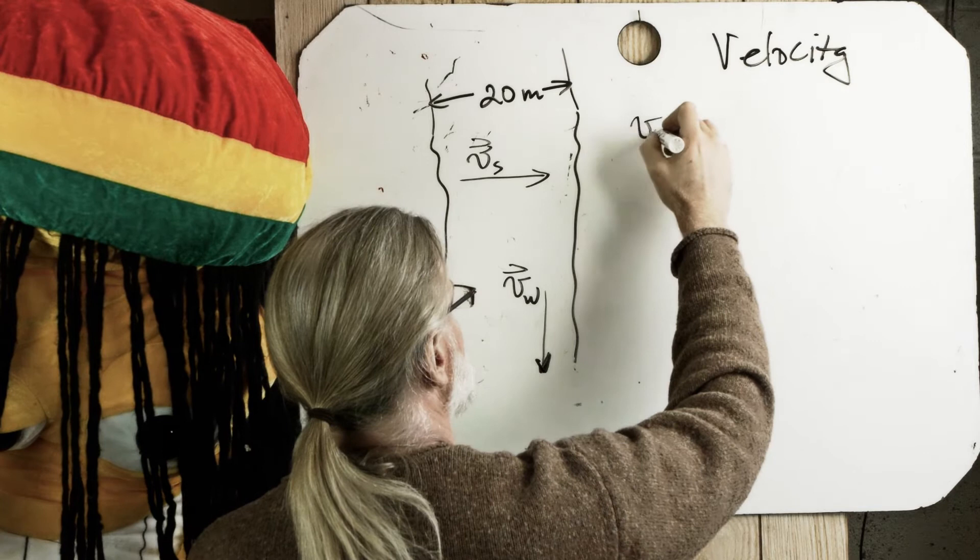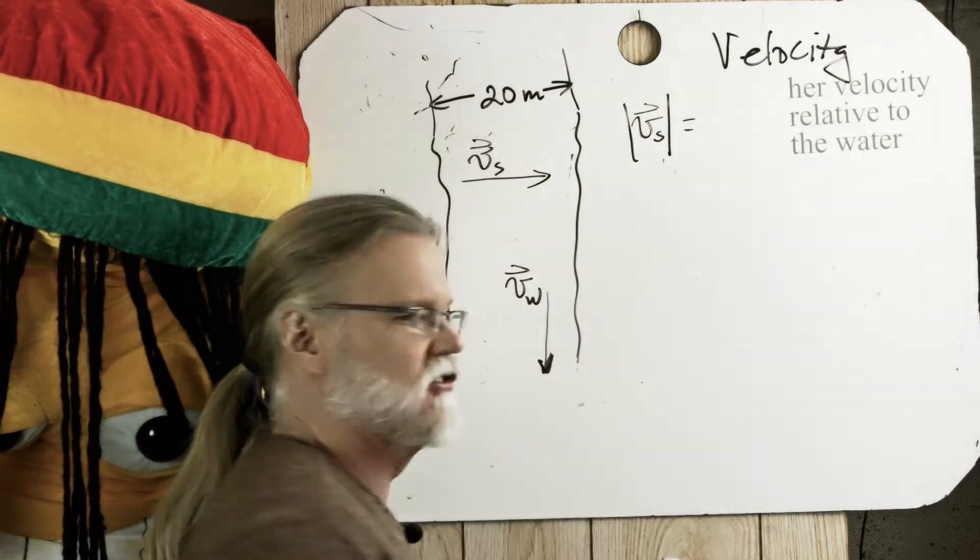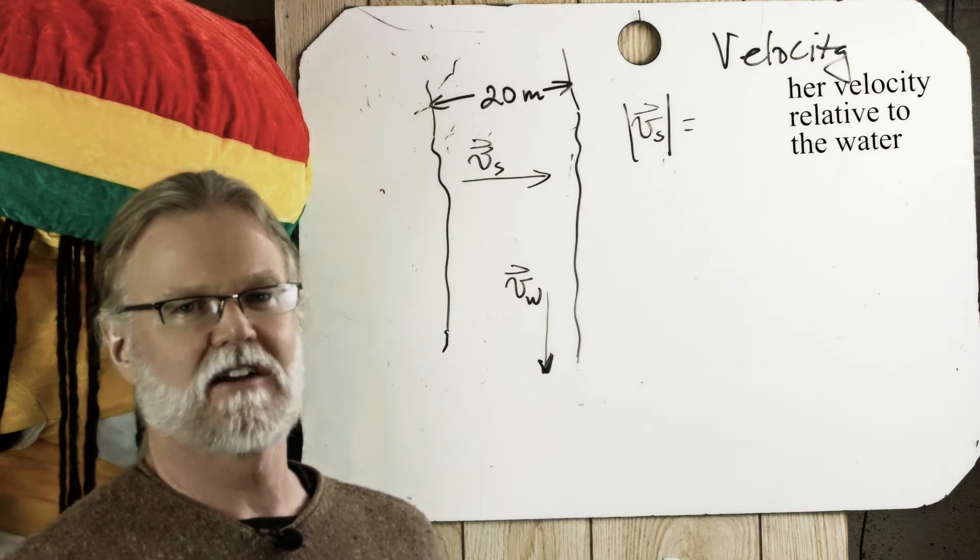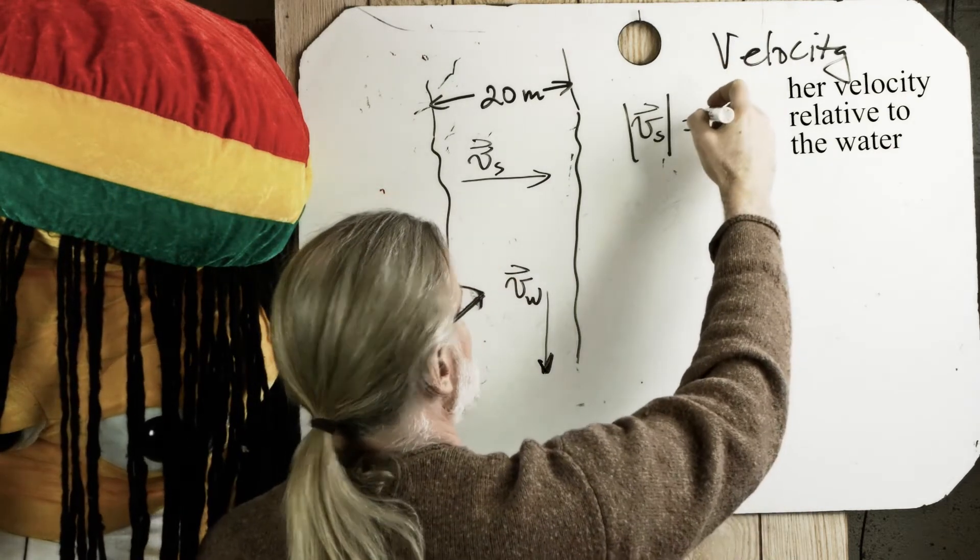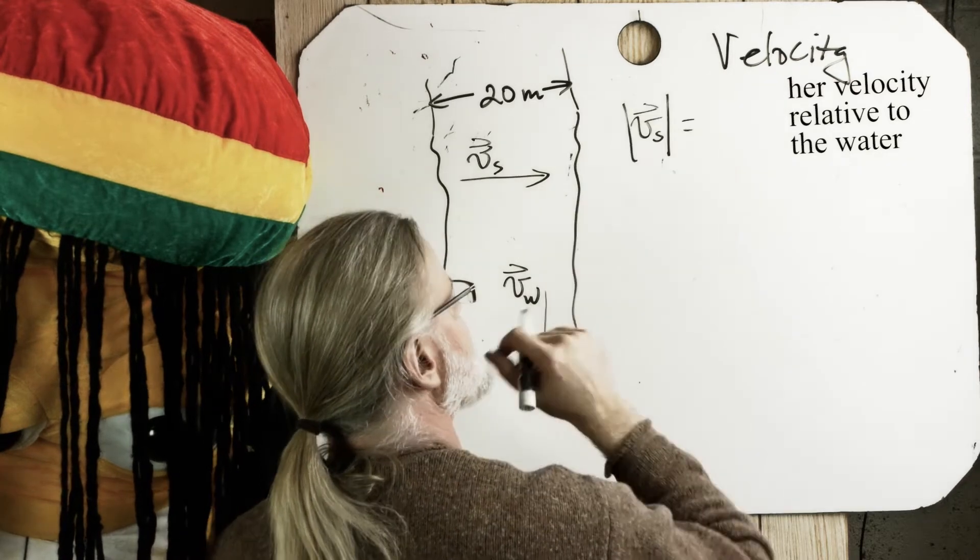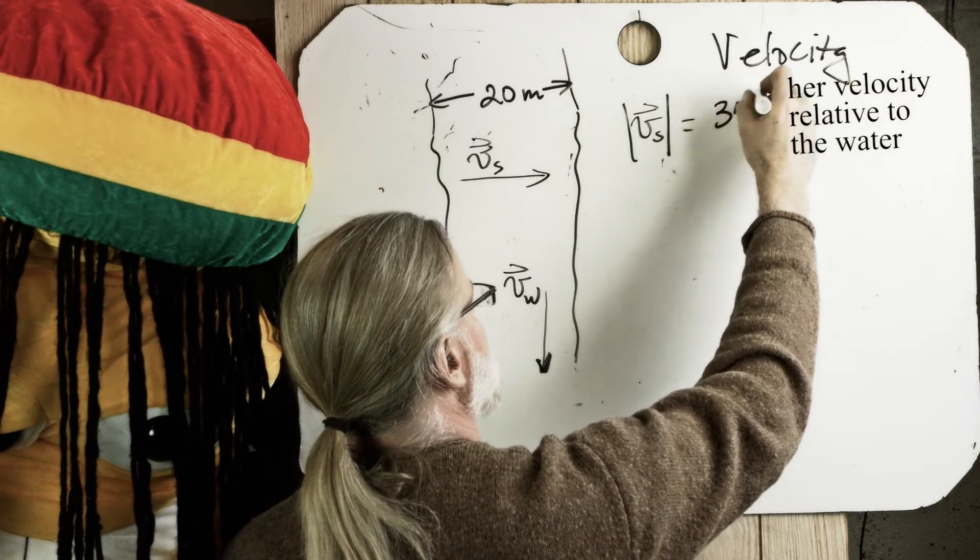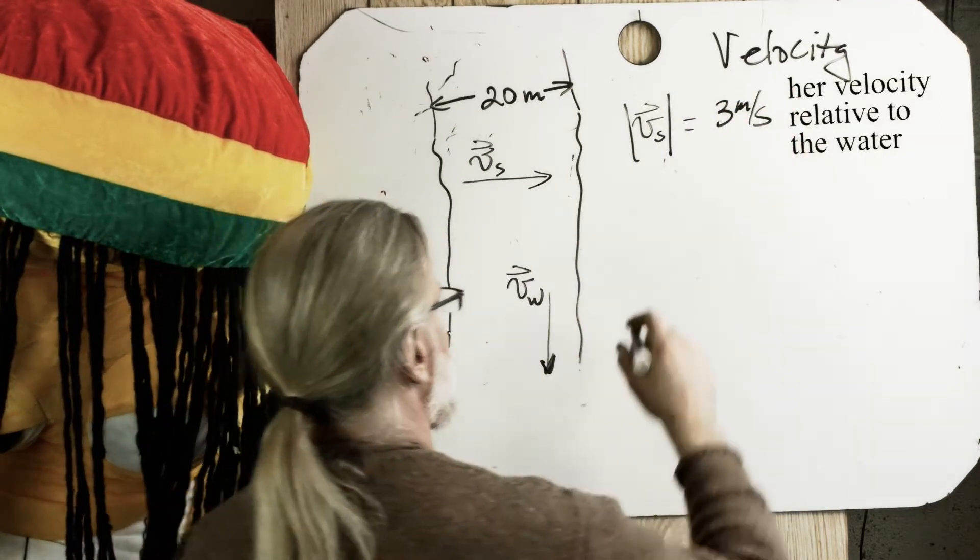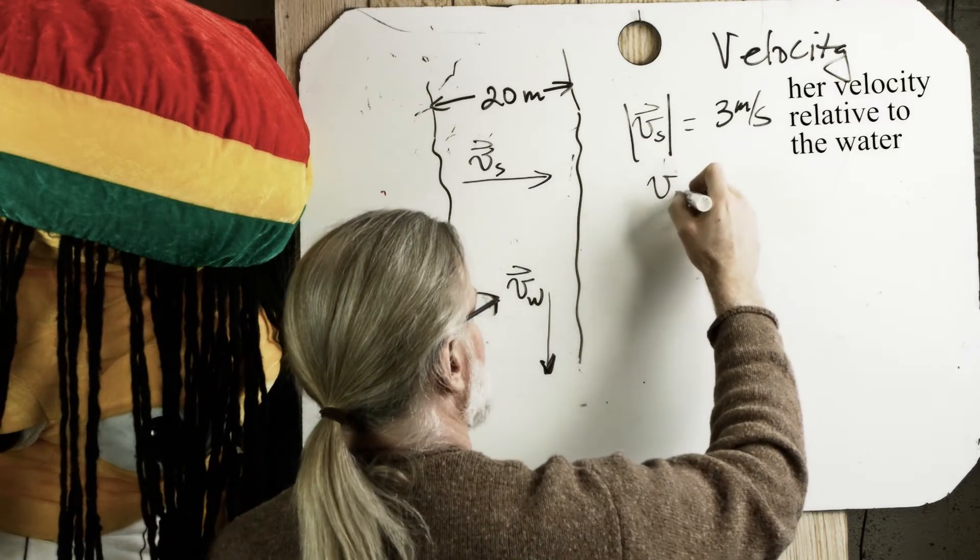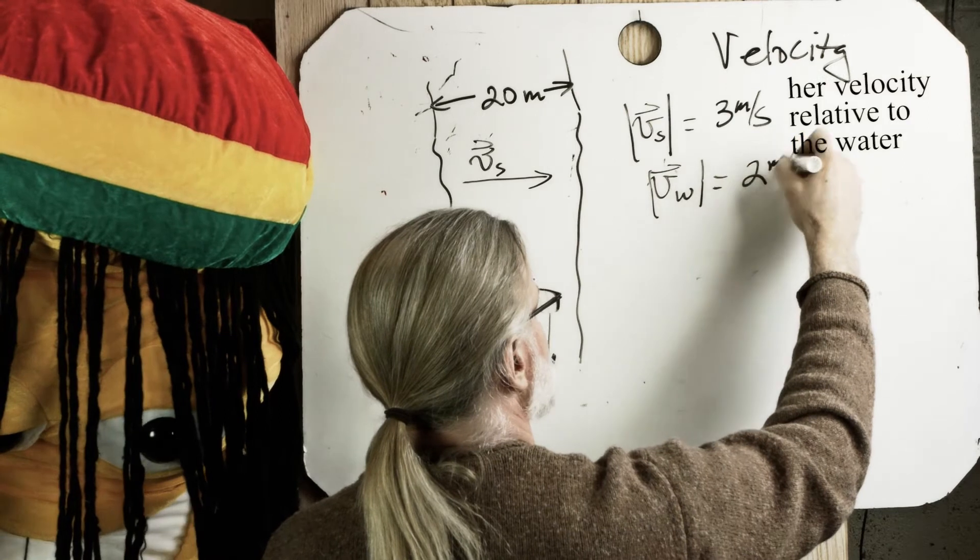So let's say the magnitude of the velocity of Sally, magnitude is just the amount. Vectors have magnitude and direction. So the velocity of Sally, the magnitude of the velocity of Sally is, let's say three meters per second. She can travel three meters per second and the magnitude of the velocity of the water is two meters per second.